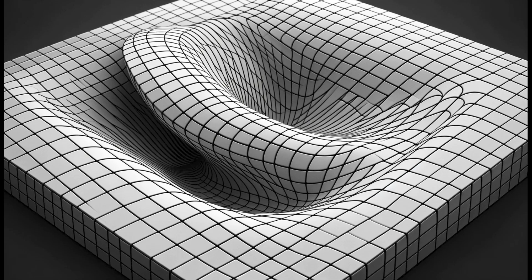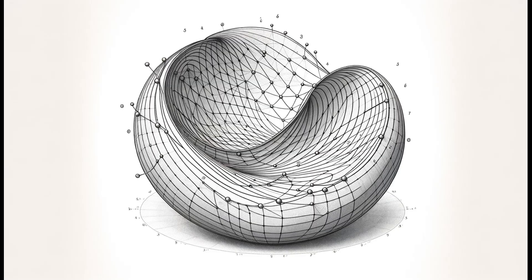In general relativity, this relationship is incorporated by the Einstein field equations, where the curvature of spacetime defined by the metric tensor is related to the distribution of mass and energy. Objects in free fall move along these geodesics, which represent natural paths dictated by the geometry of the curved spacetime. The preservation of geodesic properties during the transformation from Euclidean to Riemannian space has profound implications both mathematically and physically.